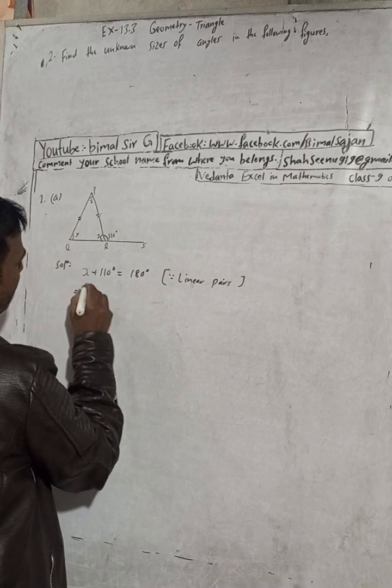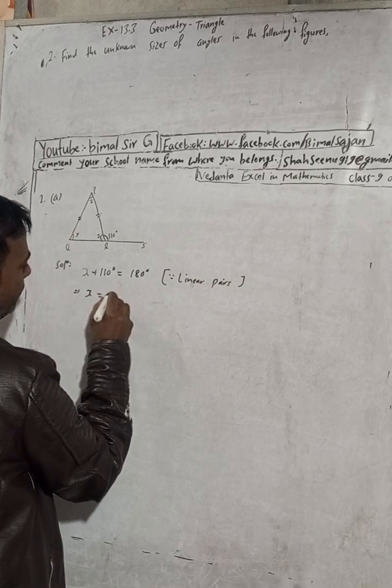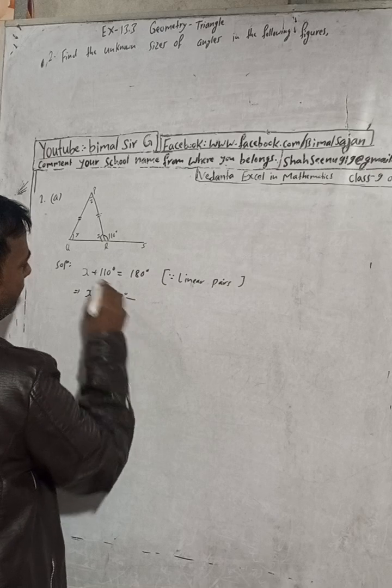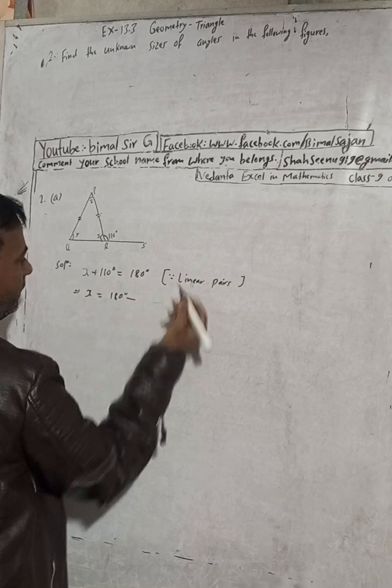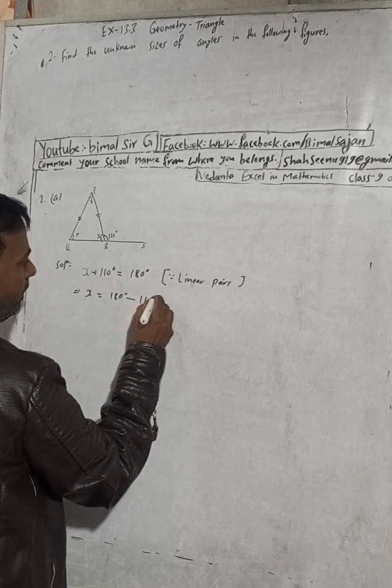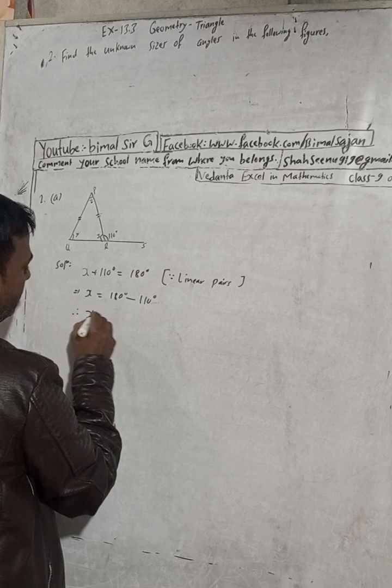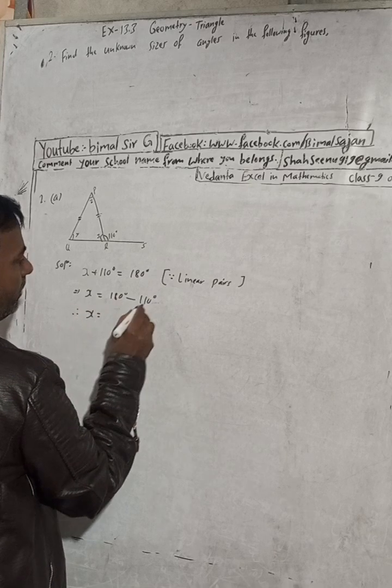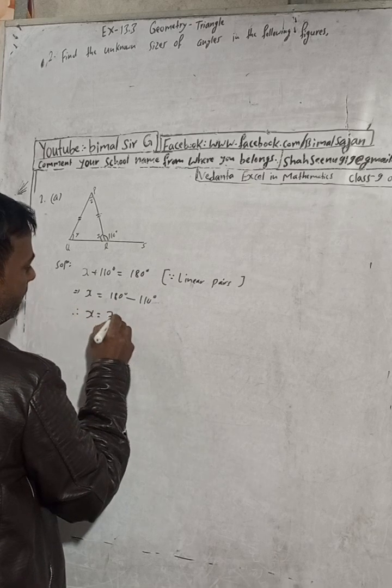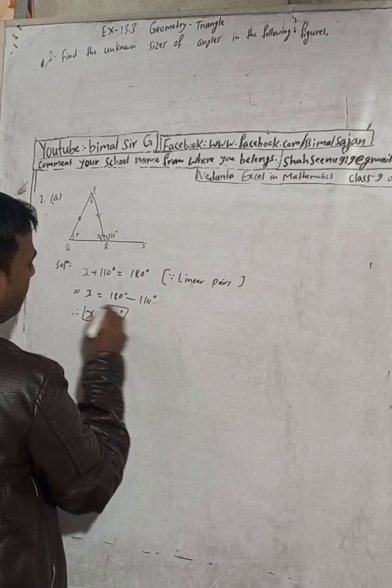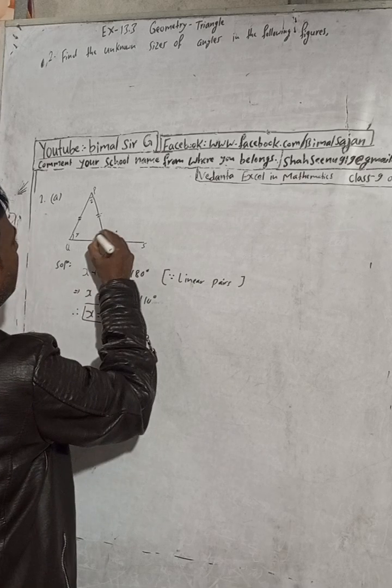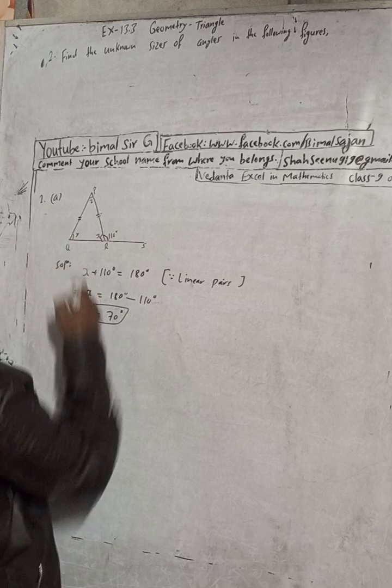So now here x is equal to, this is 180 degrees and this is plus 110 degrees. When it comes to this side it becomes minus 110 degrees. Therefore x is equal to 180 minus 110 degrees, this is 70 degrees. So I got one answer, x is equal to 70 degrees. Now y is equal to x is equal to 70 degrees.